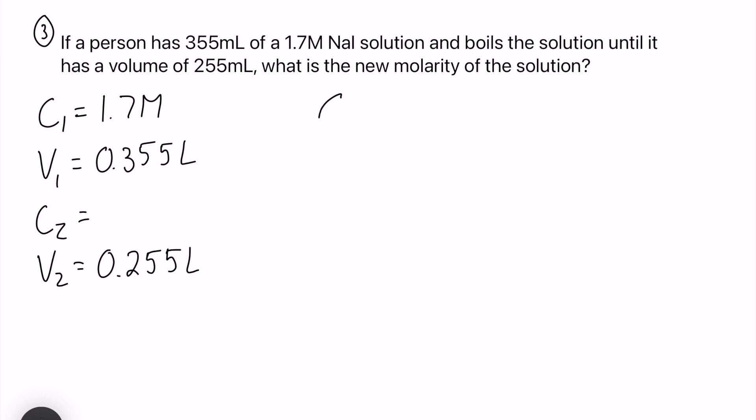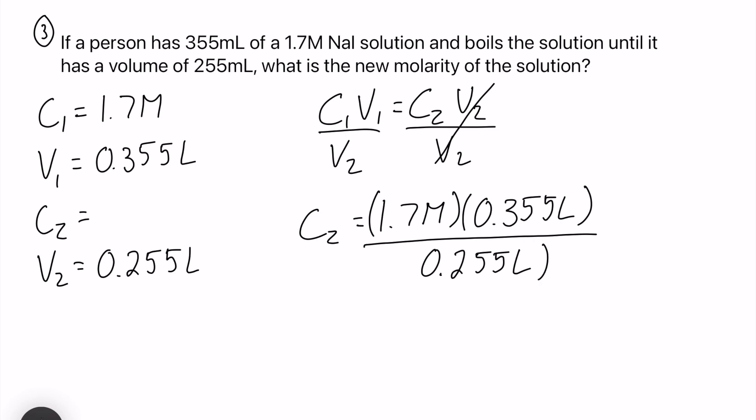Okay so let's set this up. We have C1 V1 equals C2 V2 and we're solving for C2, so let's isolate that. Divide by V2 on both sides and what we should get is C2 equals 1.7 molar multiplied by our V1 which is 0.355 liters and that is over 0.255 liters. And let's see what we get when we plug this into our calculator. So again we have 1.7 multiplied by 0.355 divided by 0.255, and as a second concentration you get 2.36 molar.